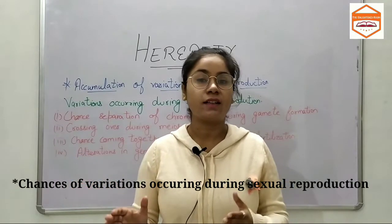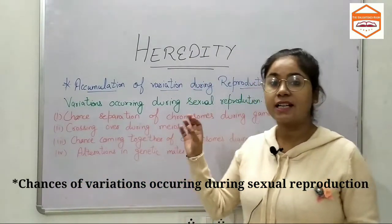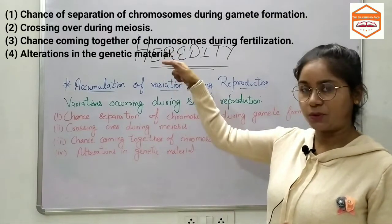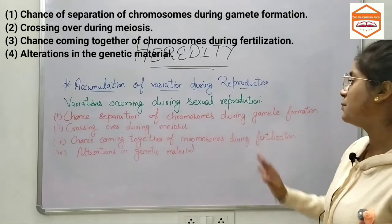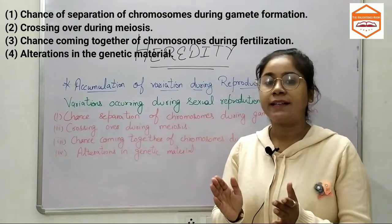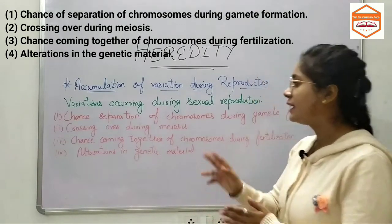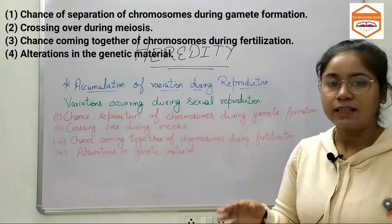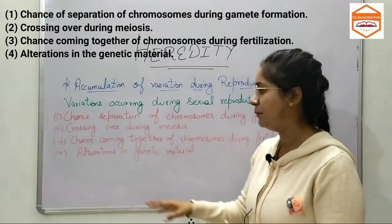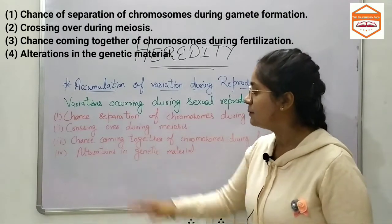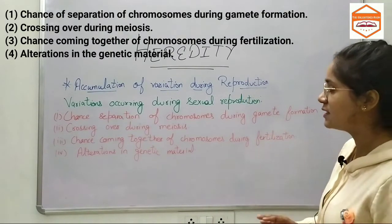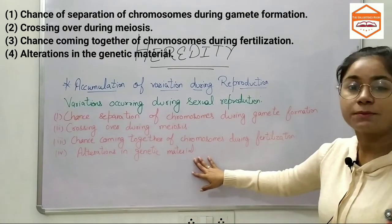These are the various chances occurring during sexual reproduction. The first one is chance separation of chromosomes during gamete formation — we call it gametogenesis. Number two is crossing over during meiosis — you would have studied all of these in the chapter reproduction. Number three is chance coming together of chromosomes during fertilization. And number four is alterations in genetic material, also known as mutation.